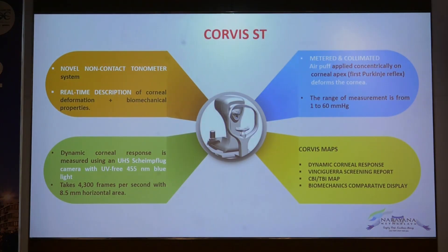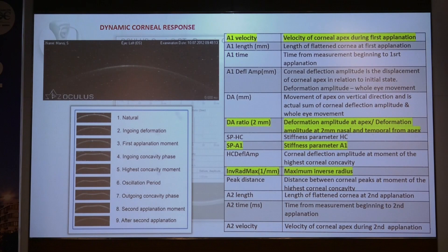Coming to the corneal biomechanics — the Corvis ST is a non-contact tonometer that gives a real-time description of corneal deformation and biomechanical properties. It has a Scheimpflug camera with UV-free 455 nm blue light, gives 4300 frames per second, and delivers a metered collimated air puff that deforms the cornea, with a measurement range of 1–60 mmHg. The Corvis maps include the dynamic corneal response, the Vinciguerra screening report, the CBI-TBI map, and the biomechanics comparative display. In the dynamic corneal response, which has 9 stages, the most important parameters are the A1 velocity, the DA ratio, the SP1 or stiffness parameter, and the inverse radius max.